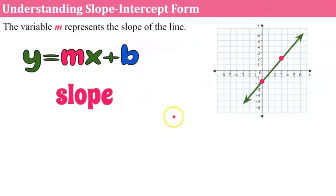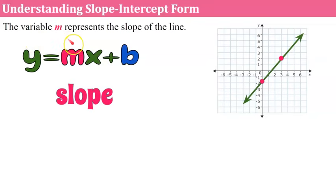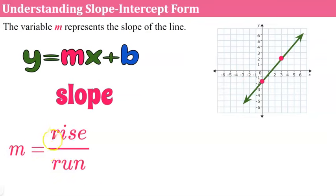Now let's use and understand slope-intercept form. The variable m represents the slope of the line. It's always found when the equation is solved for y — the coefficient of x is the slope of your line. The slope, represented by m, is equal to rise over run. When you first learned about slope, you learned to rise and run from one point to another to calculate the ratio of slope.